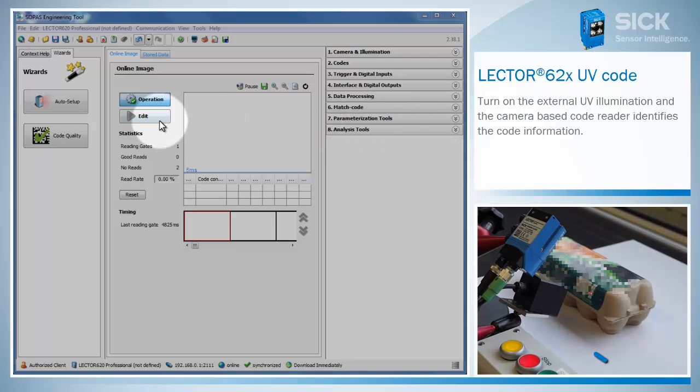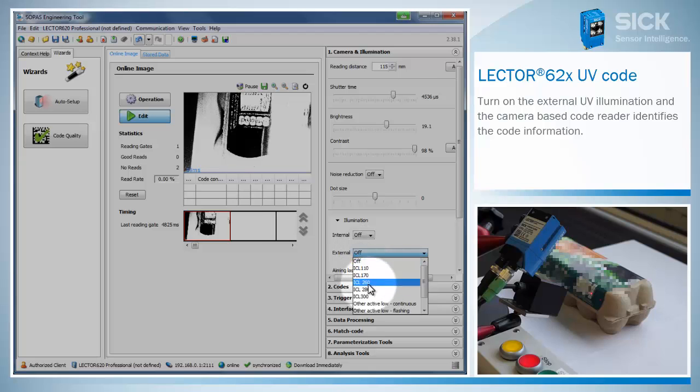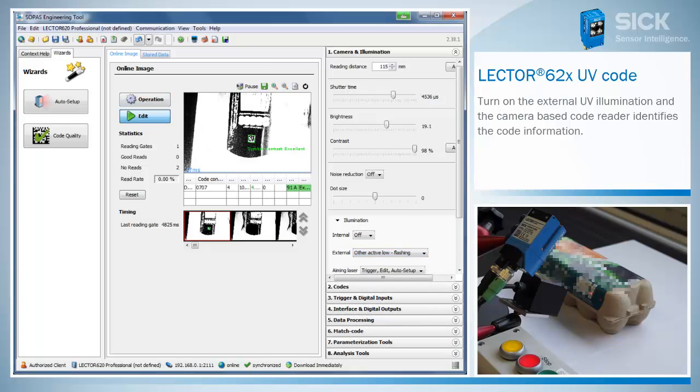Great! The Lector 62x in combination with an external UV illumination is able to read the UV code easily. Just turn on the external illumination and the camera-based code reader identifies the code information.